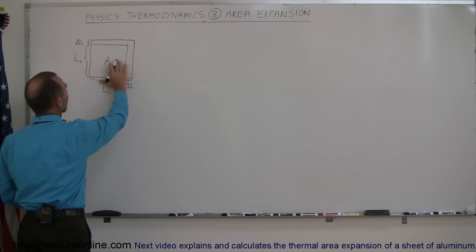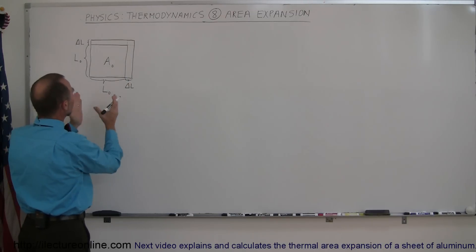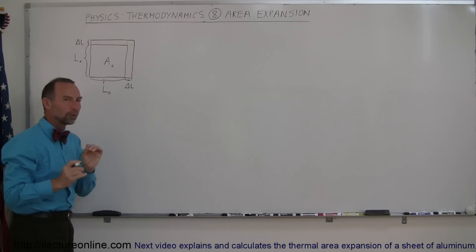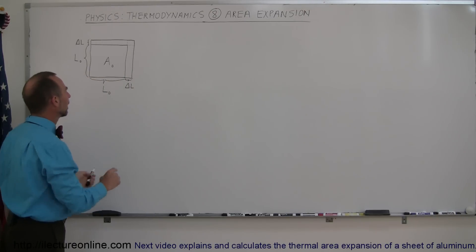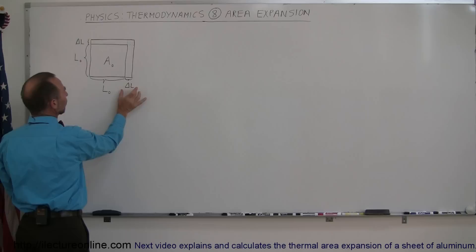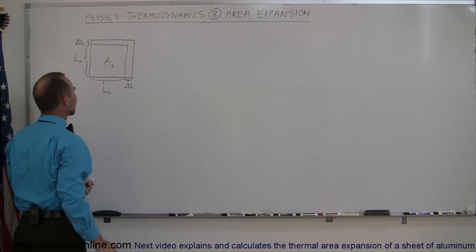So let's say that this was our original area. We heat up that plate, let's say it's a thin plate. Then it's going to expand in all directions. Of course, we're only going to look at the expansion in one direction here, makes it easier to do the mathematics. And so let's say that each length increases by a small amount of delta L in this direction and delta L in that direction.